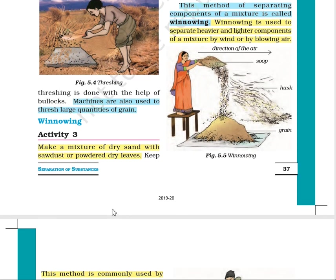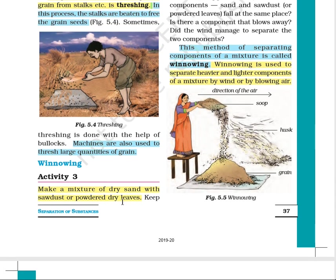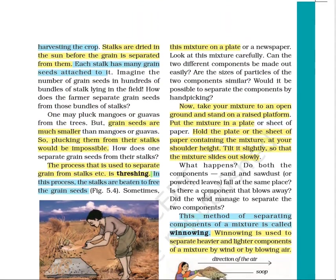Activity 3: Make a mixture of dry sand, sawdust, and powdered dry leaves. Take some dry leaves, crush them into a powder, then mix them with grain. Now try to separate it — is it possible to hand pick or thresh it? No. In this method we use wind. The mixture has two components: grain, which is heavier, and crushed powdered leaves, which are lighter.